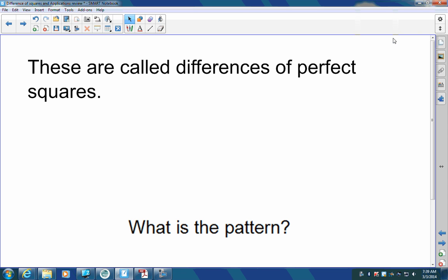All right, we have some special polynomials that are called perfect squares. Perfect squares are when we have two terms and we have a minus sign in between them. So, for example, x squared minus 49.